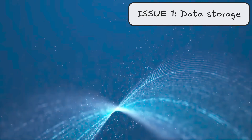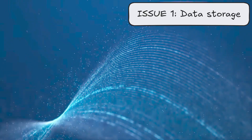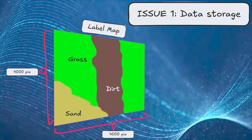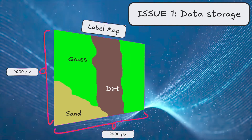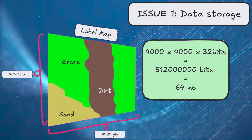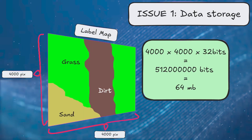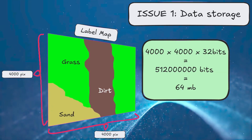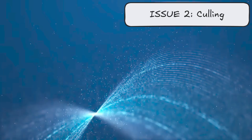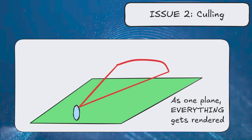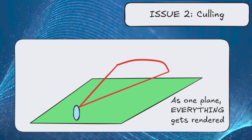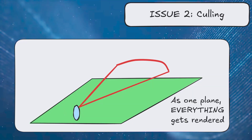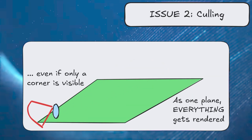Just slapping the terrain labeling texture onto an image might work, but it is prone to some issues. Firstly, the terrain labels map to a 4000 by 4000 pixel image. If you just put it onto one single image, that'd be a 64 megabyte image that needs to be saved into the project. Whereas if you're able to store the labels as bytes, you can get some pretty significant performance savings. Another issue is culling — if this was rendering onto one single plane, we couldn't take advantage of culling built into the engine, and every single part of that plane would need to be rendered, including the multi-mesh of the grass, even if only a corner is visible.